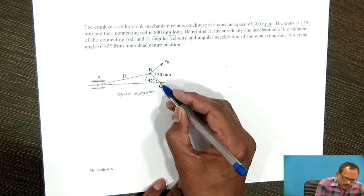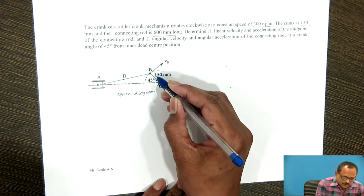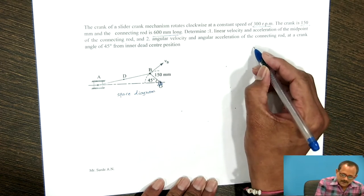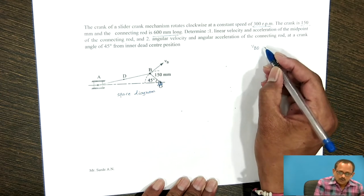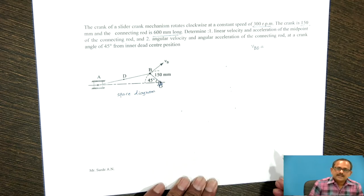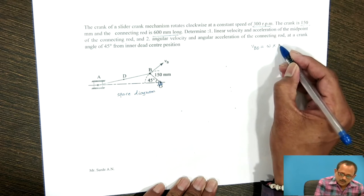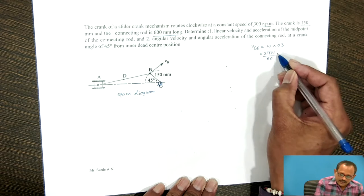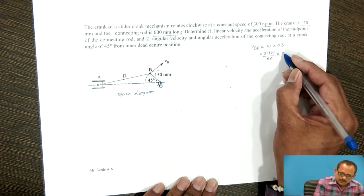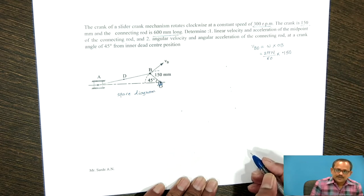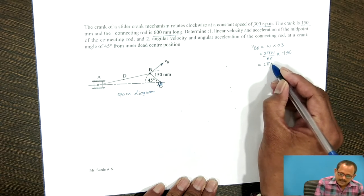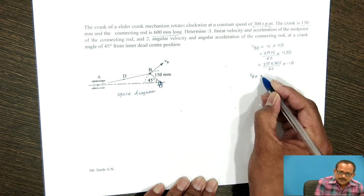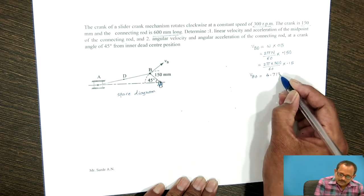Point O is fixed and point B is rotating with respect to O in the clockwise direction. First, find the velocity of point B with respect to O. The velocity of any point with respect to another point is given by omega multiplied by the link length OB. Angular velocity is given by 2πN/60, multiplied by link length OB, which is the crank length of 150 mm, or 0.150 m. Putting in the value of RPM: 2π × 300 / 60 × 0.15, you get the velocity of B with respect to O as 4.713 meters per second.